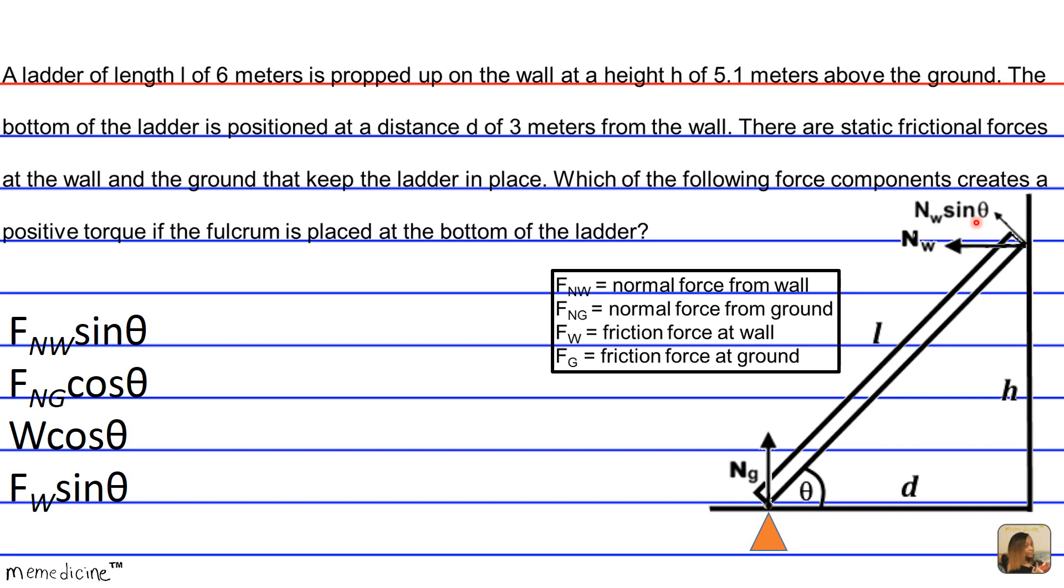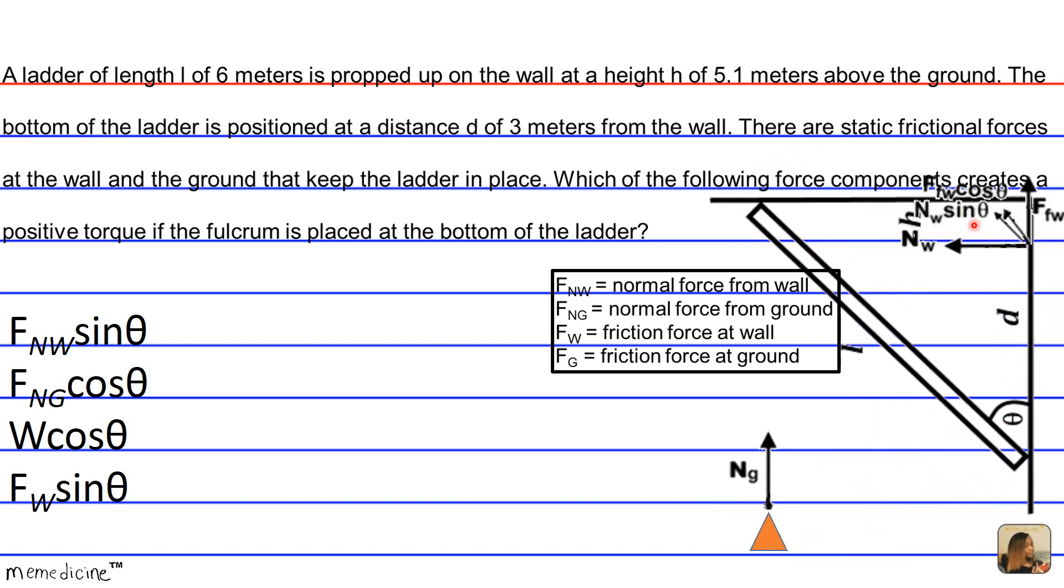And F sub NW points from the contact point in the ladder. F sub FW, that's like the friction force, points from the point of contact in the ladder that goes upwards along the wall to oppose for falling. And F sub NW sine theta would be the force component along the plane of the ladder, pointing into the wall. So there's nothing there, but F sub W, or F sub FW cosine of theta is pointing in a similar direction as F sub NW sine theta. It's also a force that creates a counterclockwise torque.